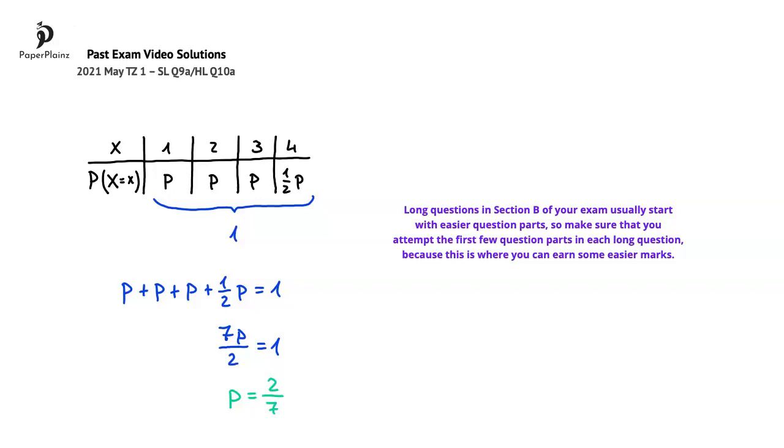In other words, in section B questions are designed so the difficulty increases within each question, so it makes sense to try to solve at least part A and B of each long question in section B, because this is where you can earn some of the easier marks on your exam.